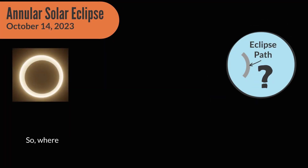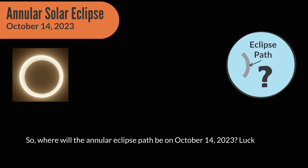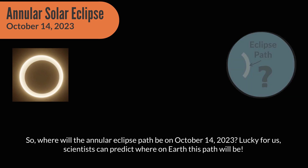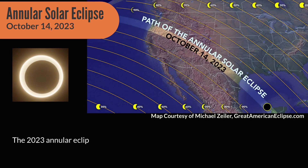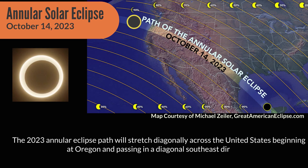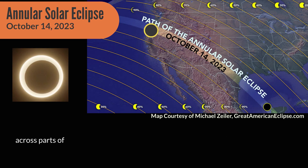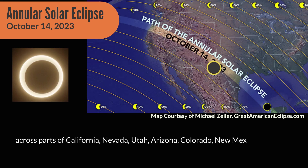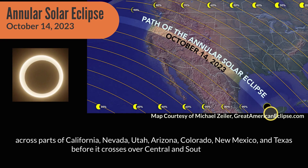So where will the Annular Eclipse path be on October 14, 2023? Scientists can predict where on Earth this path will be. The 2023 Annular Eclipse path will stretch diagonally across the United States, beginning in Oregon and passing in a diagonal southeast direction across parts of California, Nevada, Utah, Arizona, Colorado, New Mexico, and Texas, before it crosses over Central and South America.